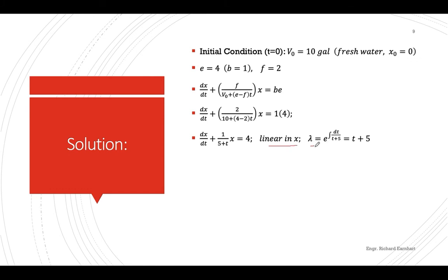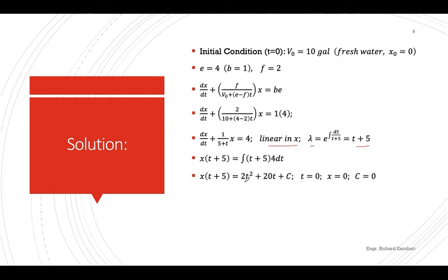Treating this as a linear equation, we solve for the integrating factor, which is (t+5). Substituting into the general solution — x multiplied by lambda equals the integral of lambda times the right-hand side dt — and integrating the right-hand side gives 2t² plus 20t plus a constant of integration.